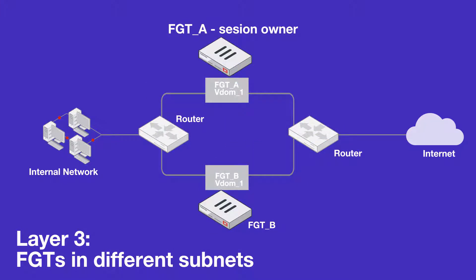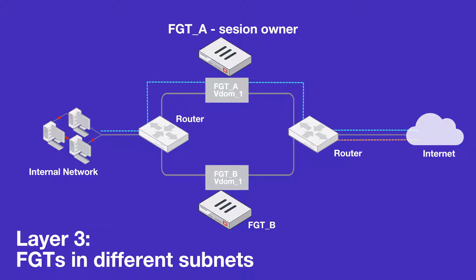But what if FortiGate peers are on different subnets and layer 2 connectivity is not available? For example, in cloud environments. In this case, traffic bound for the session owner FortiGate A is forwarded through the peer-to-peer link from FortiGate B. Then traffic is inspected by FortiGate A.